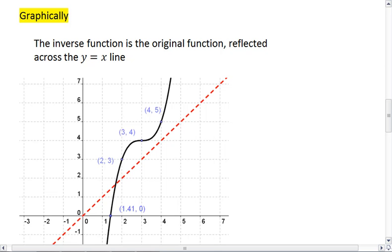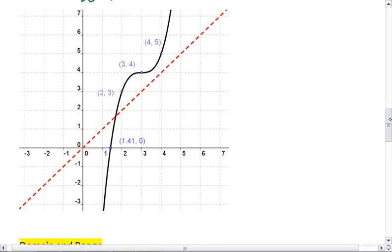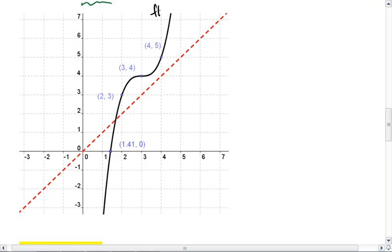Graphically, our inverse function is the original function, but reflected across the y equals x line. So in the graph below, we're given the original function, which is the black line, and that's f of x.